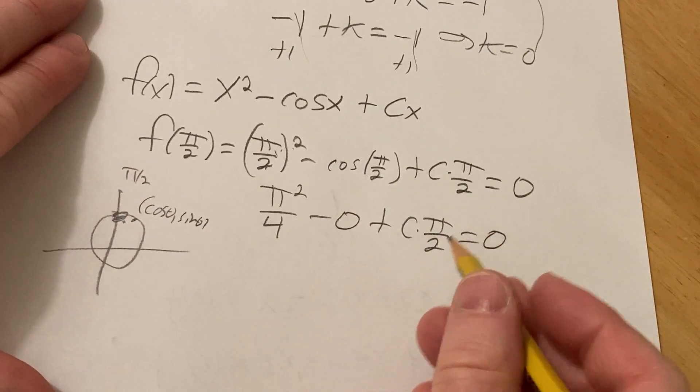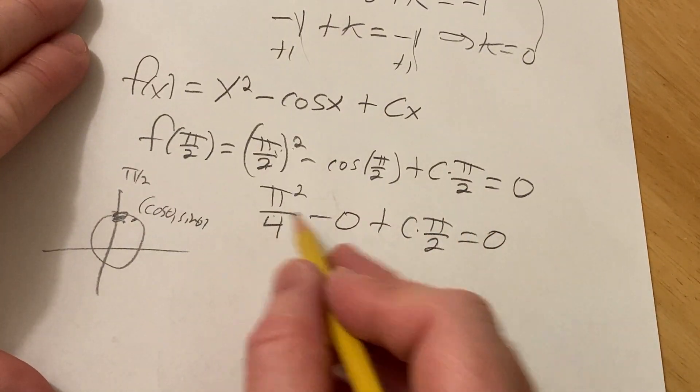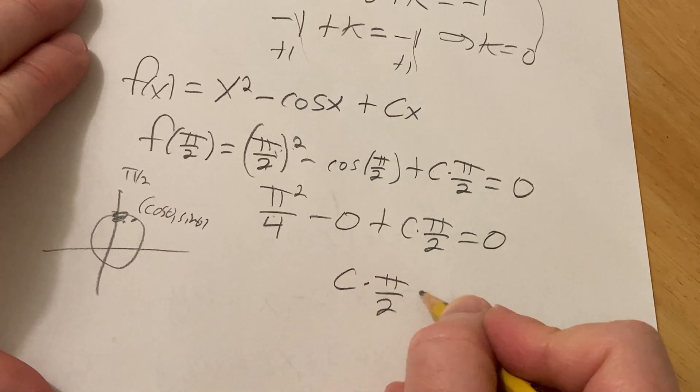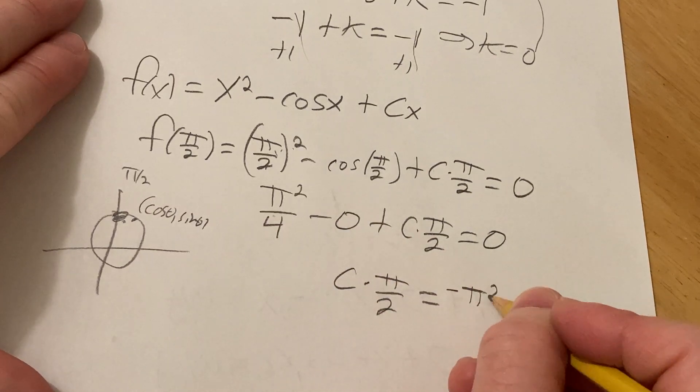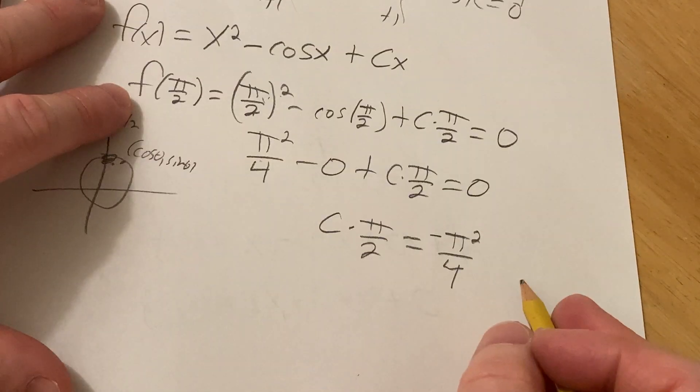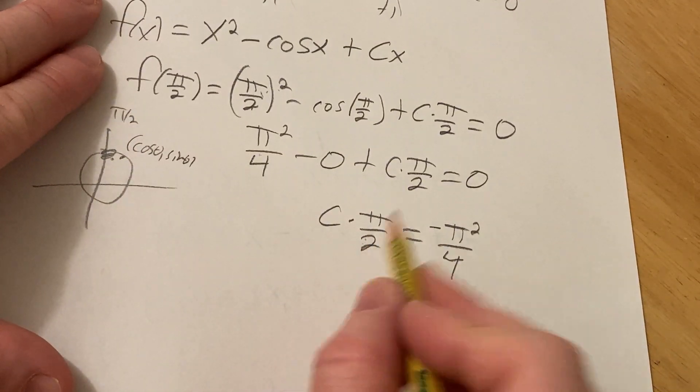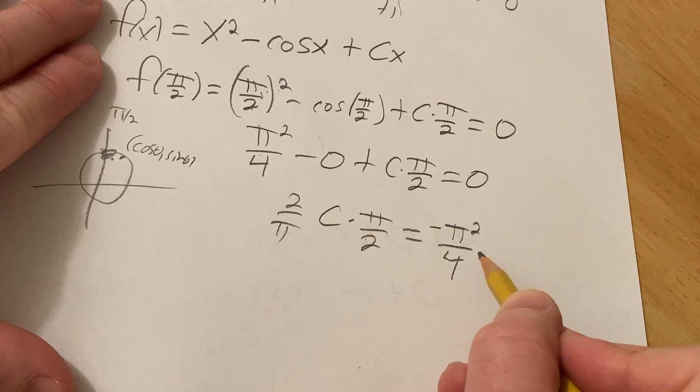So, we'd have to solve this for c. So, I guess we can subtract this. So, we have c times pi over 2 equals negative pi squared over 4. And, I guess we can multiply now by the reciprocal of pi over 2.